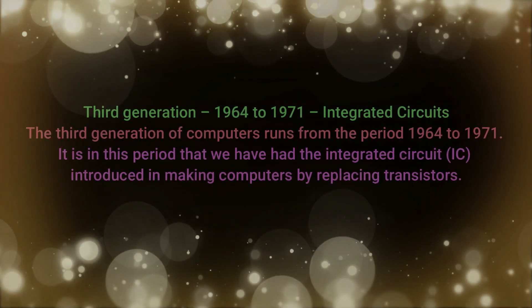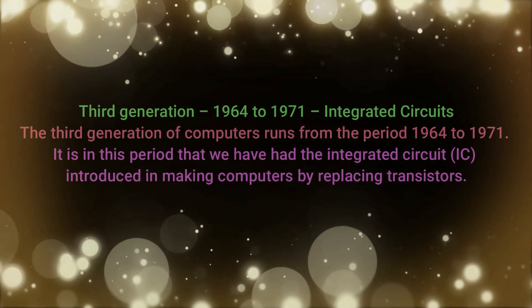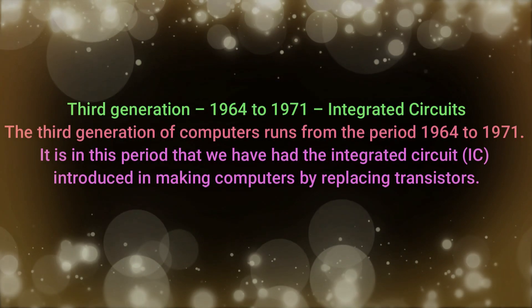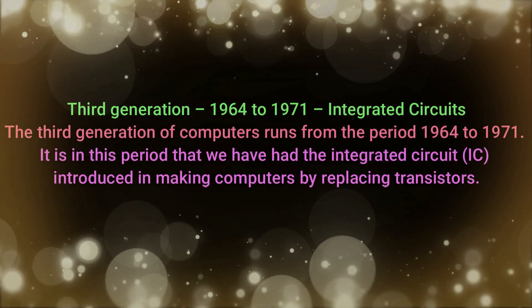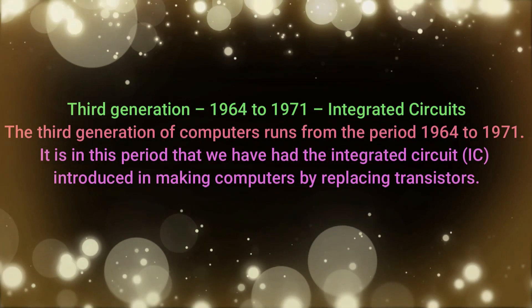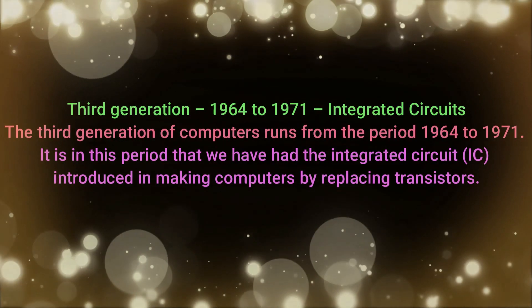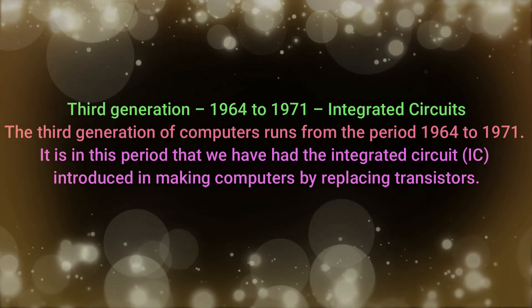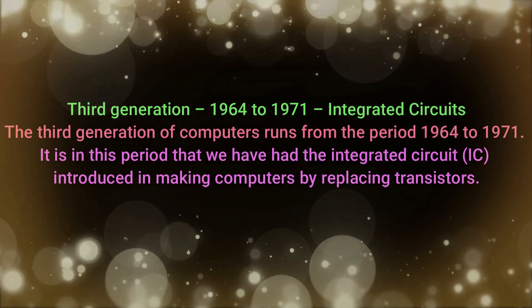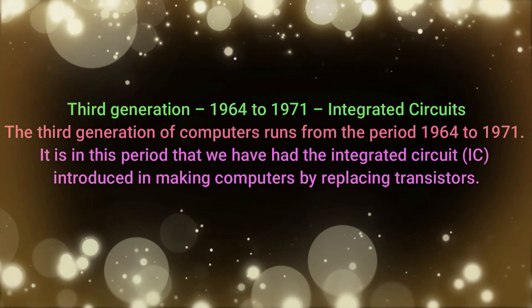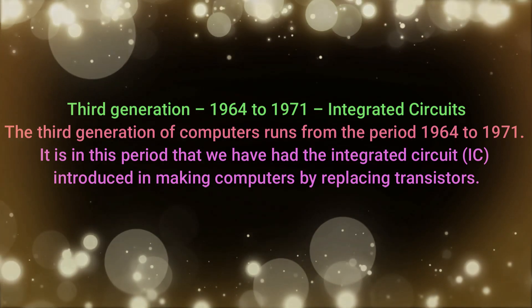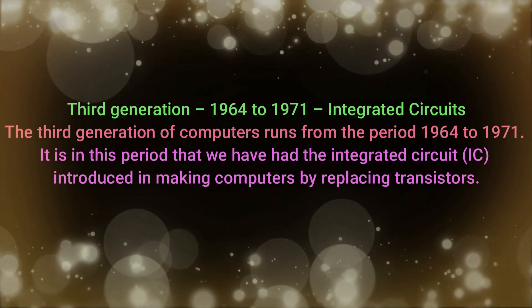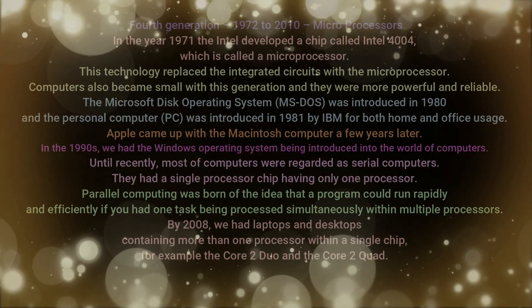Third generation: The third generation of computers runs from 1964 to 1971. It is in this period that the integrated circuit was introduced in making computers, replacing transistors.